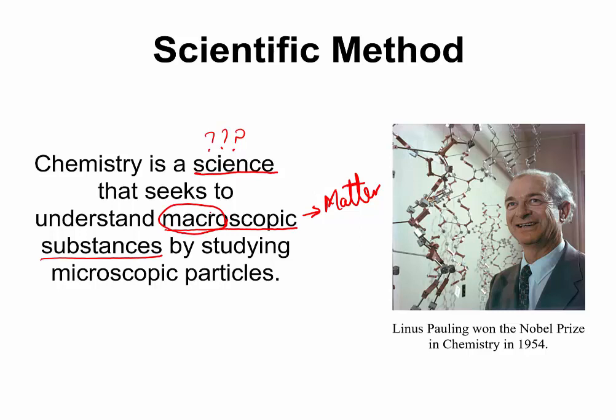Macro means something that is very big. So in chemistry, we want to understand the things that we can see by studying microscopic particles, by studying the things that are too small to be seen with naked eyes, that will require a microscope to have some ideas about them. By microscopic particles in chemistry, we're talking about atoms or molecules.